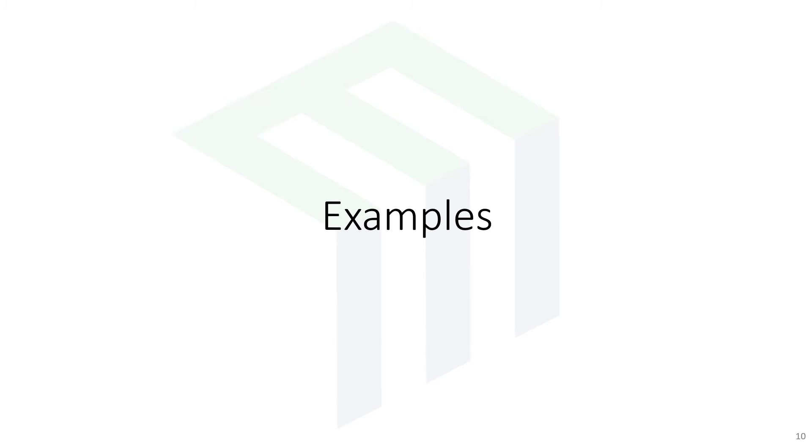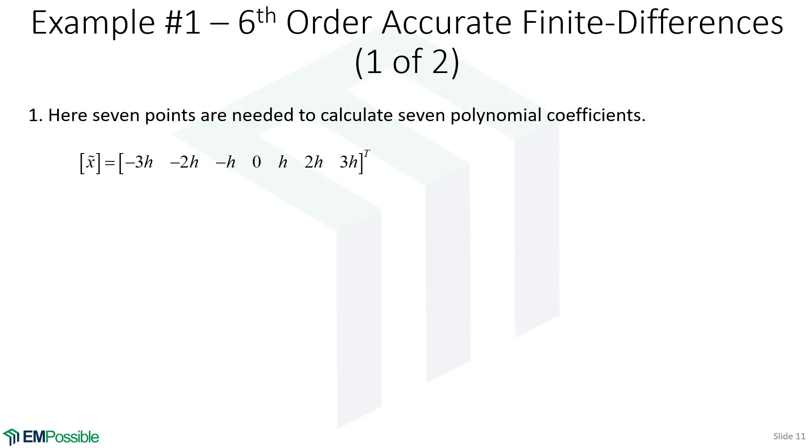Let's go through some examples, and hopefully that will clear up what we're doing. Let's do something cool. Let's calculate a 6th order accurate finite difference. This means we need 7 points: 1, 2, 3, 4, 5, 6, 7 points.